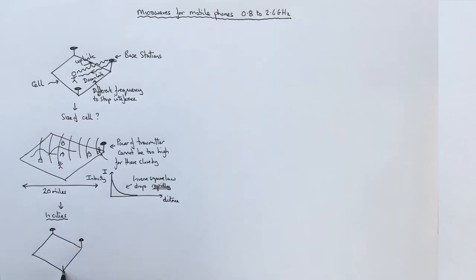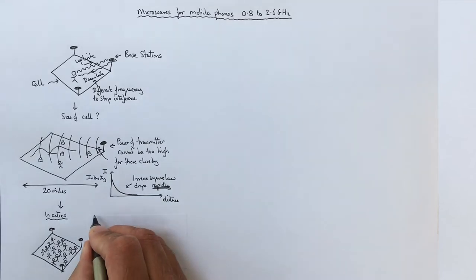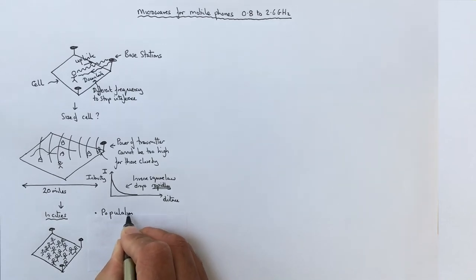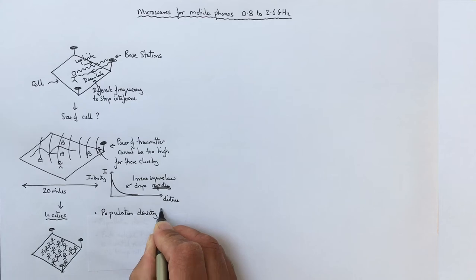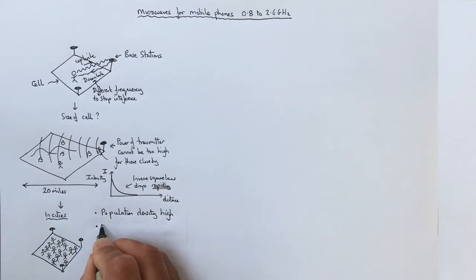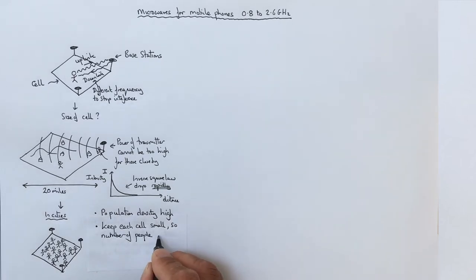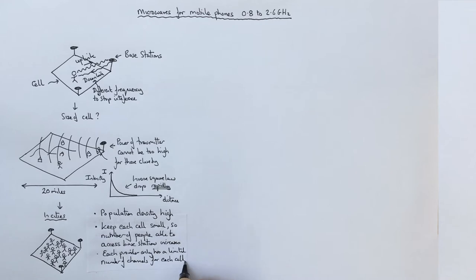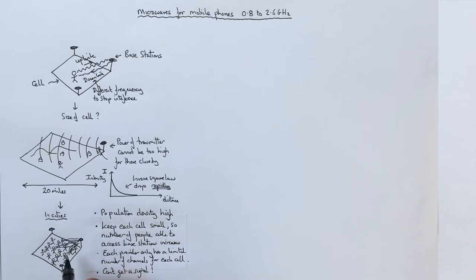So what happens to cell size in cities? Well the population density is much higher. Which means you need more base stations for that population. So you make the cell size small. So that there's a chance people inside that cell can link to the station. So keeping the cells small in cities allows the number of people able to access the stations to increase. This is because each provider only has a limited number of channels for each cell. So if you can't get a signal you'll have to wait for somebody to come off their phone so that there's a channel available for you to uplink.